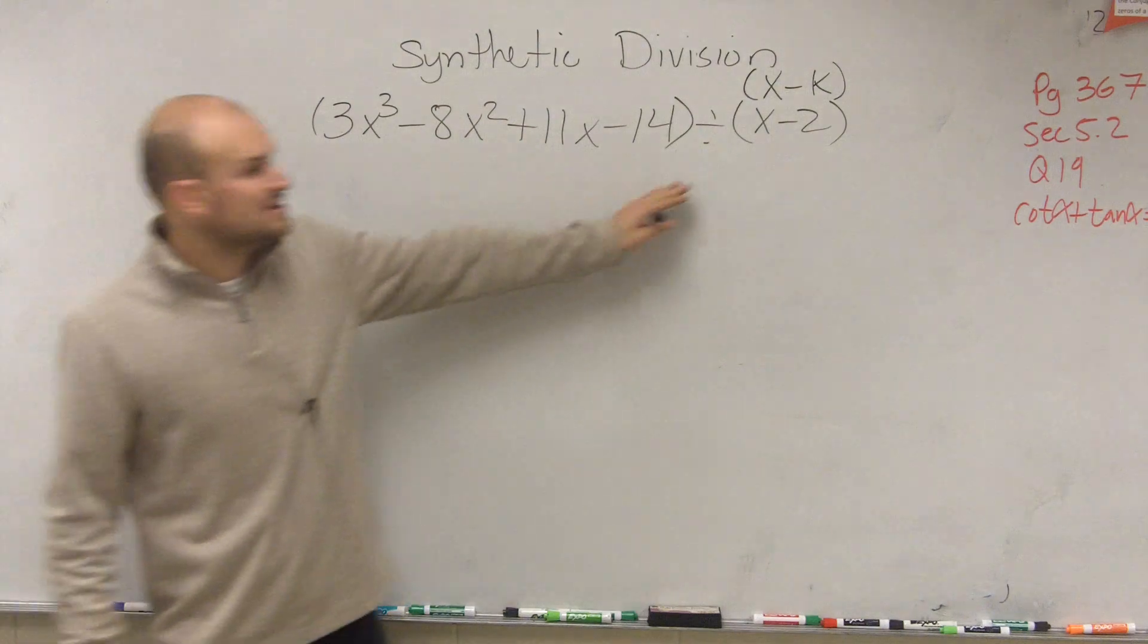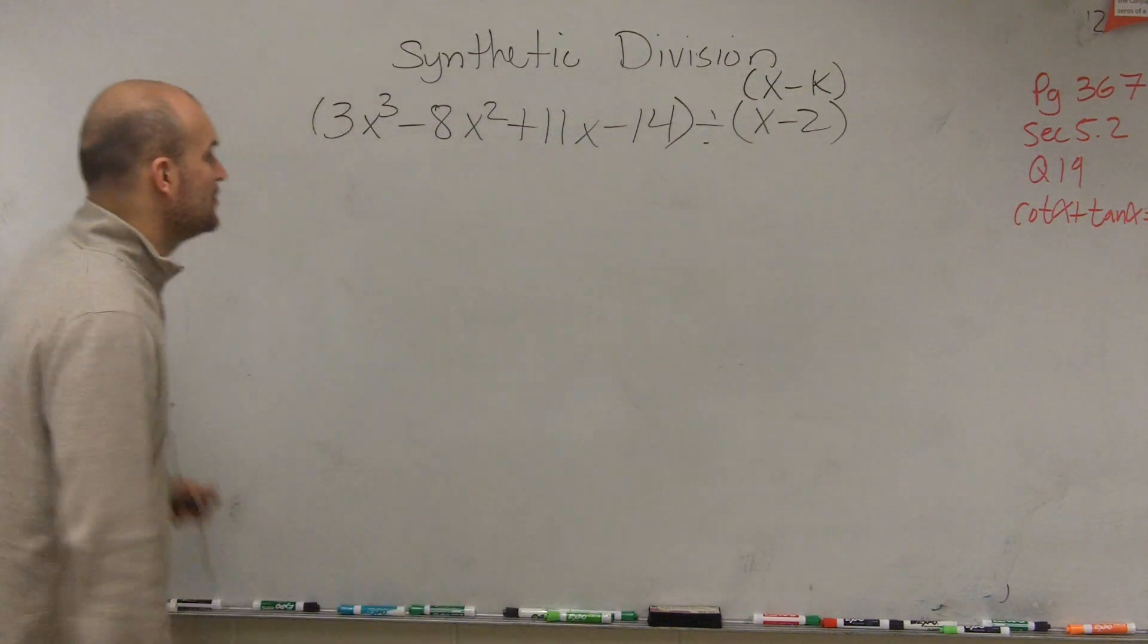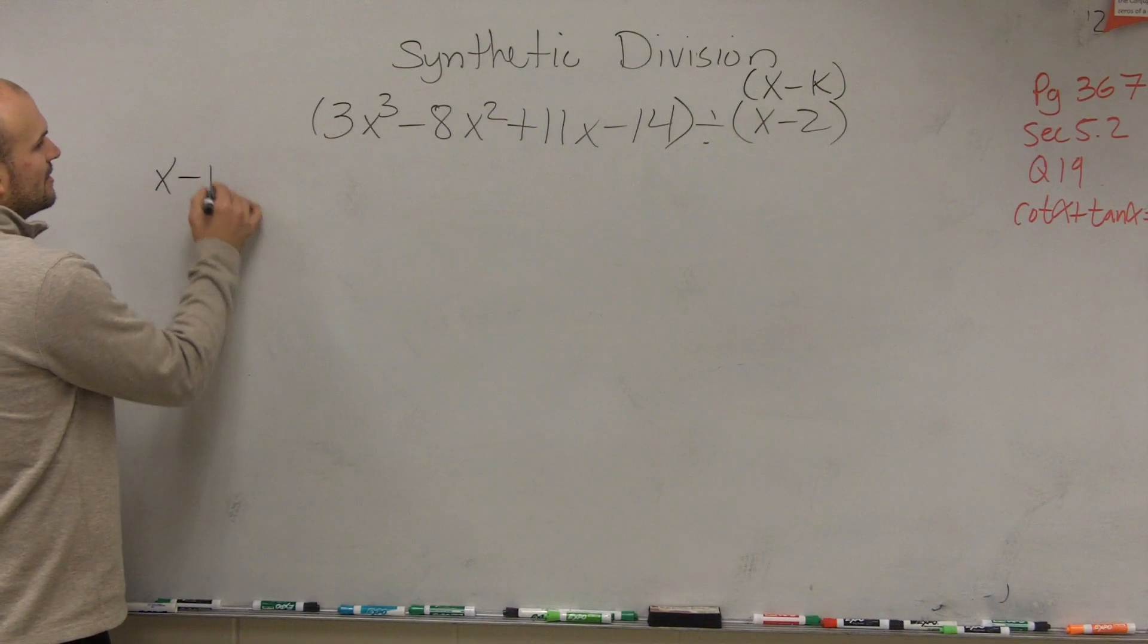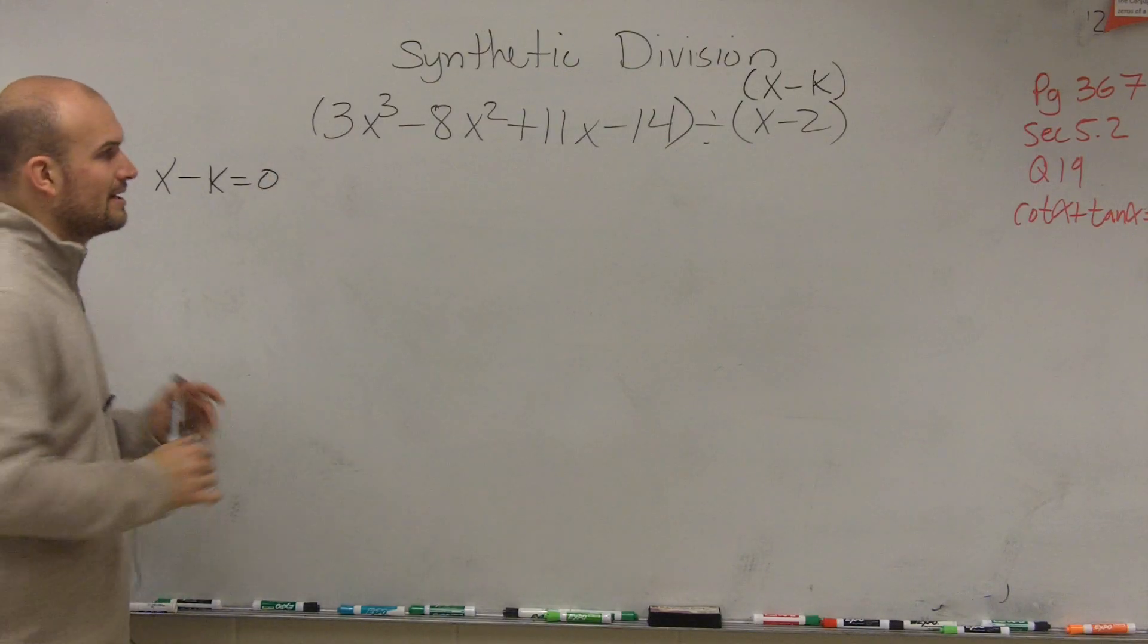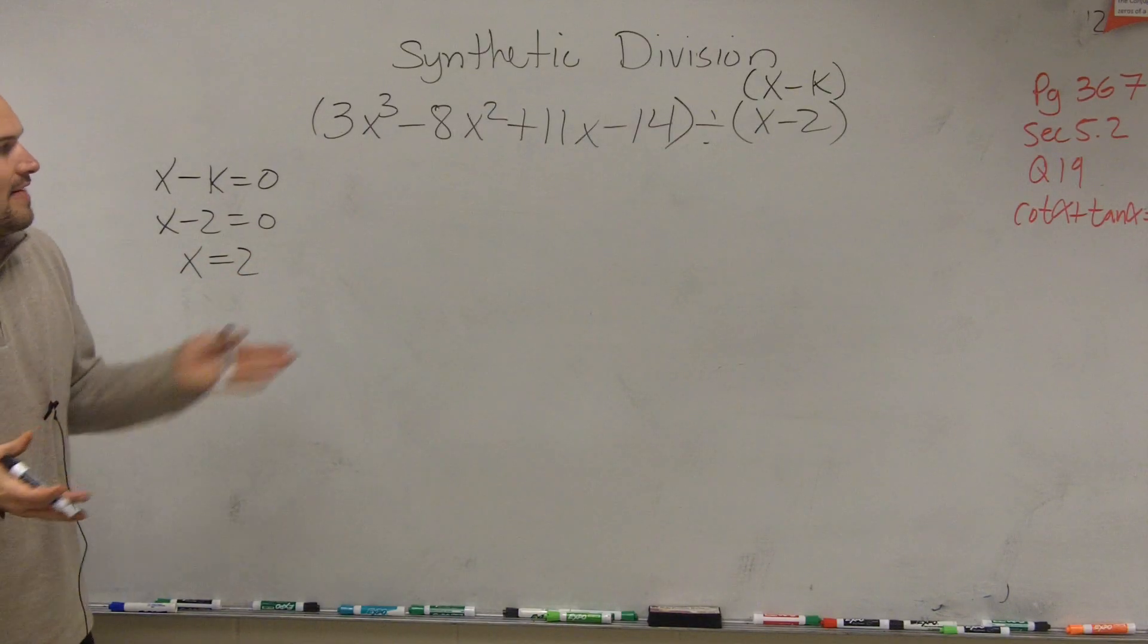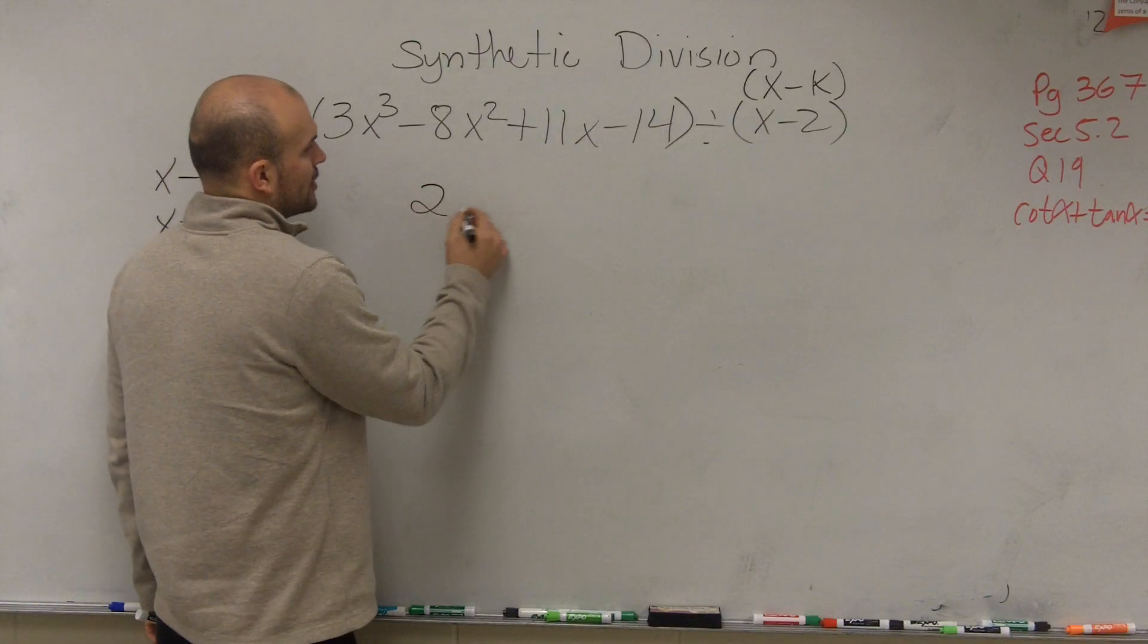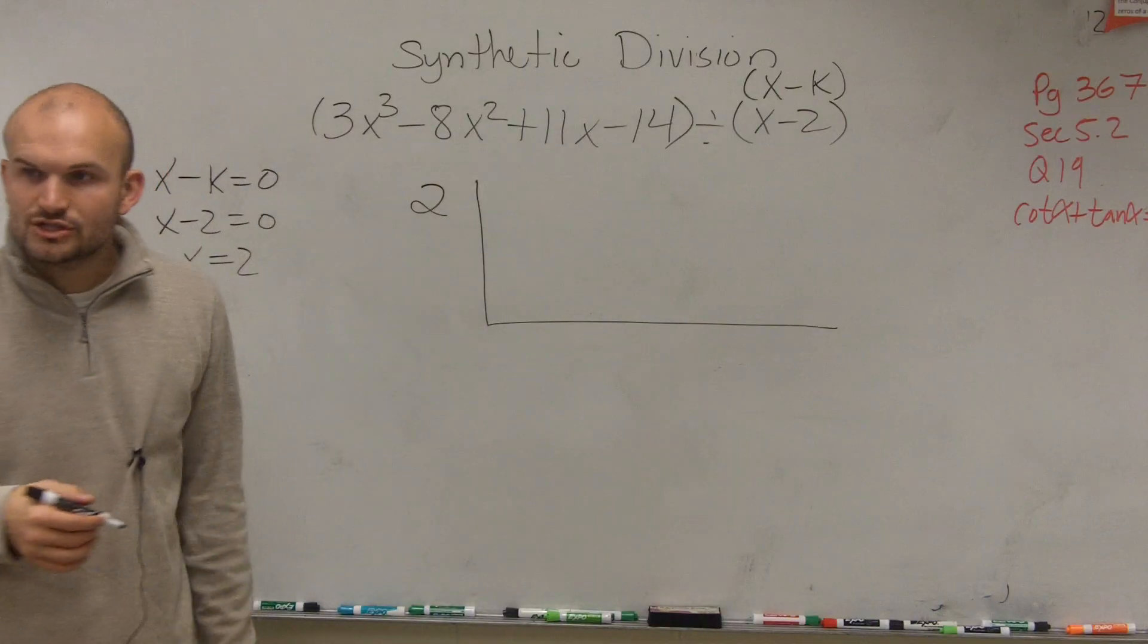In synthetic division, the main important thing is that you have it as a binomial factor. What you're going to do is take your binomial factor, x minus k, and set it equal to 0. So if I do x minus 2 equals 0, I get x equals 2. That's going to be our version of k. We're going to write 2 on the outside and make a little L-shaped box.